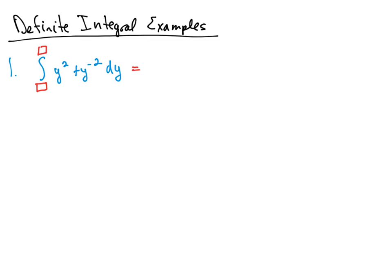So y squared — raise the power by 1, divide by that power. And then plus y to the negative 2, so negative 2 add 1 is negative 1, so plus y to the negative first divided by negative 1. Now because this is an indefinite integral, we need to add an integration constant c. I can simplify this second fraction so we don't have a negative exponent — this will be 1 over y plus c.